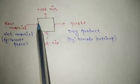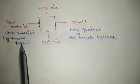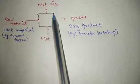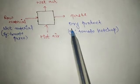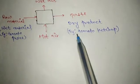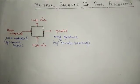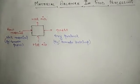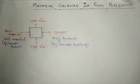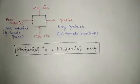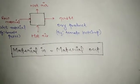In this evaporator, we put the raw material — for example, tomato puree — and when it passes through, the product that comes out is the paste or dry product, for example, tomato ketchup. For solving problems based on material balance, we know one thing: material in is equal to material out.